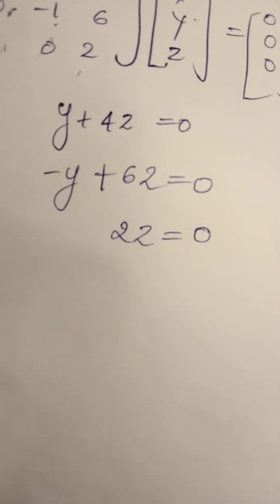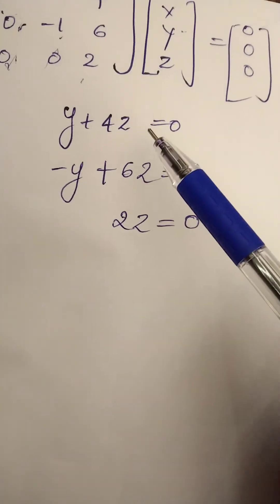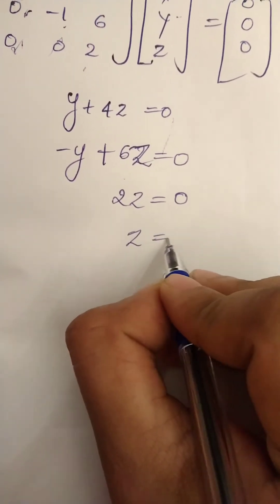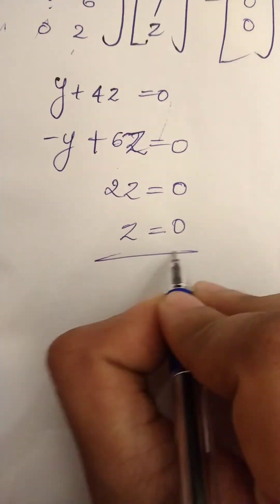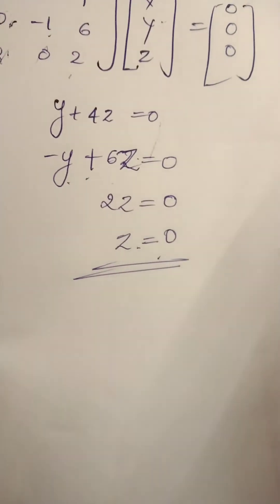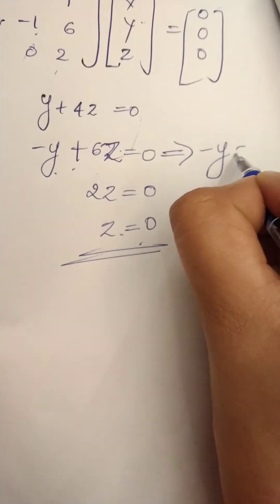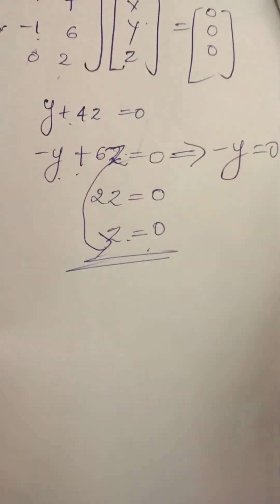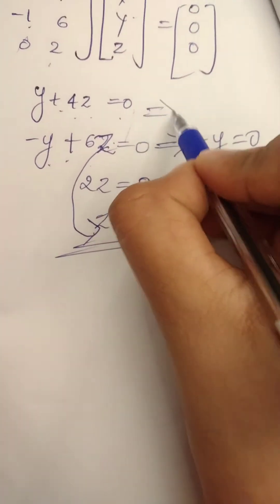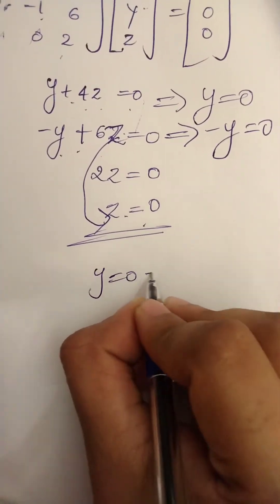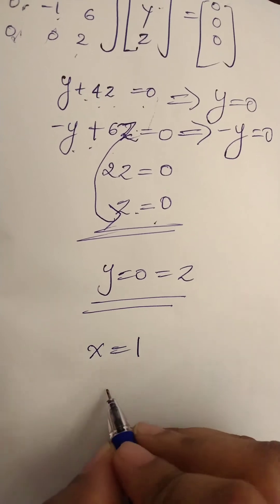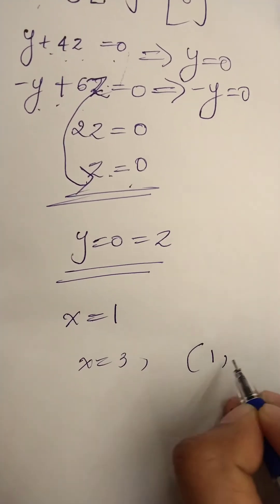We have 3 equations. We have to analyze them. We don't have x in the equation, so we work with y and z. We get 2z equal to 0, which means z equals 0. Then minus y plus 6z equals 0; since z equals 0, this implies y equals 0. Since y equals 0 and z equals 0, x equals 1. So the eigenvector for lambda equals 3 is [1, 0, 0].